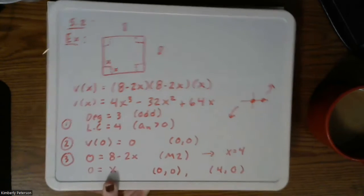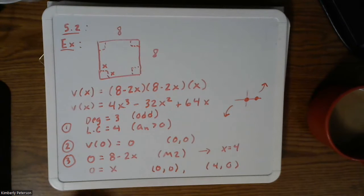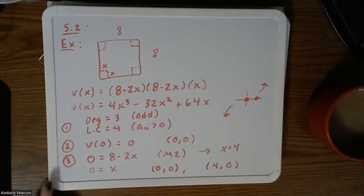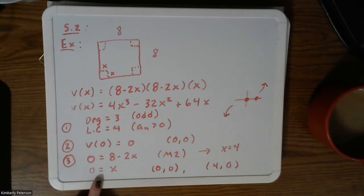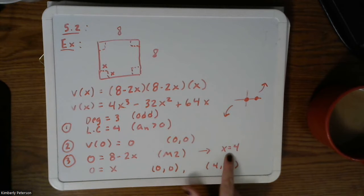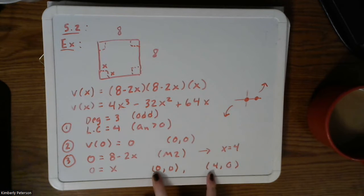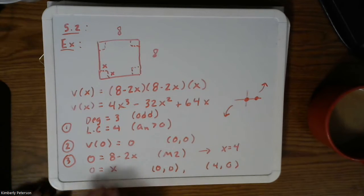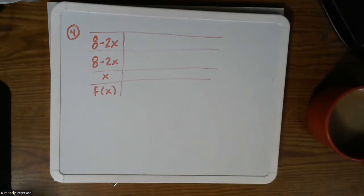We calculated the zeros in step three — we had two of them. One was zero itself, and the other was four. So zeros are zero and four. They go on top of the sign chart in order, with vertical bars separating the intervals.